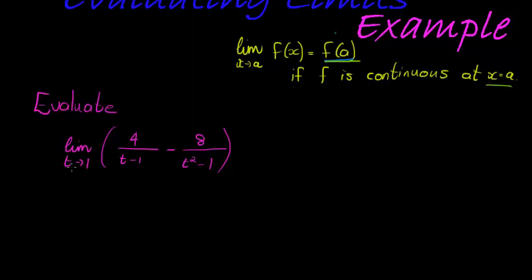We have to evaluate this limit t tends to 1. However, we can't just substitute as this would have us do, because if I substitute a 1 in here I get 4 divided by 0. Same here, 1 squared minus 1 would give me 0 as a denominator.